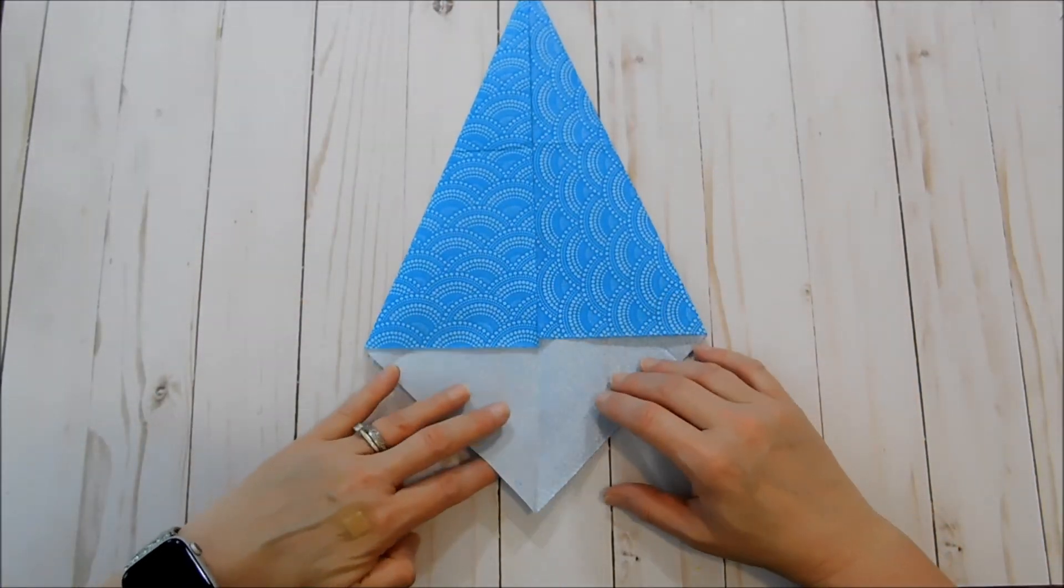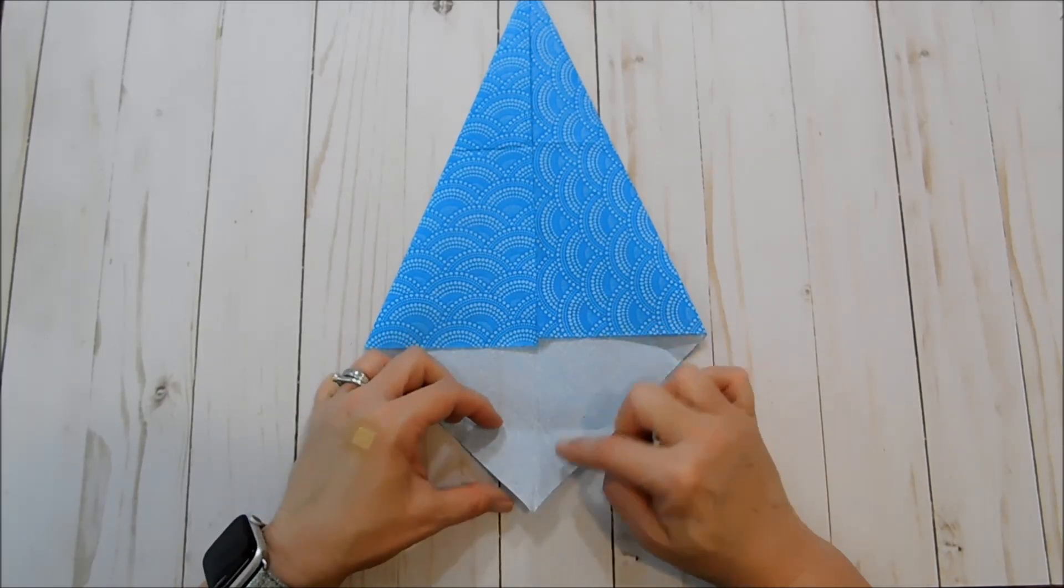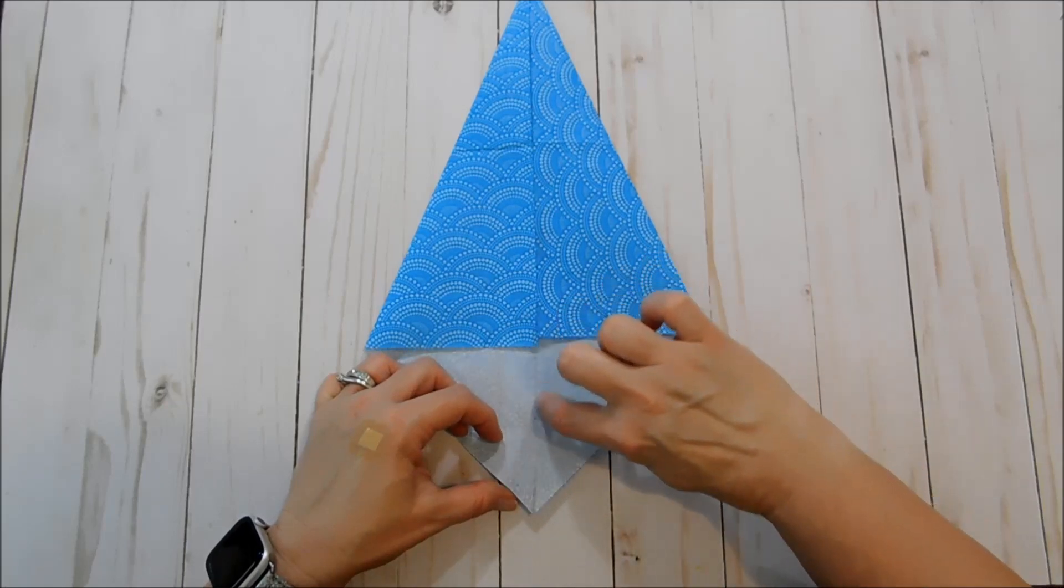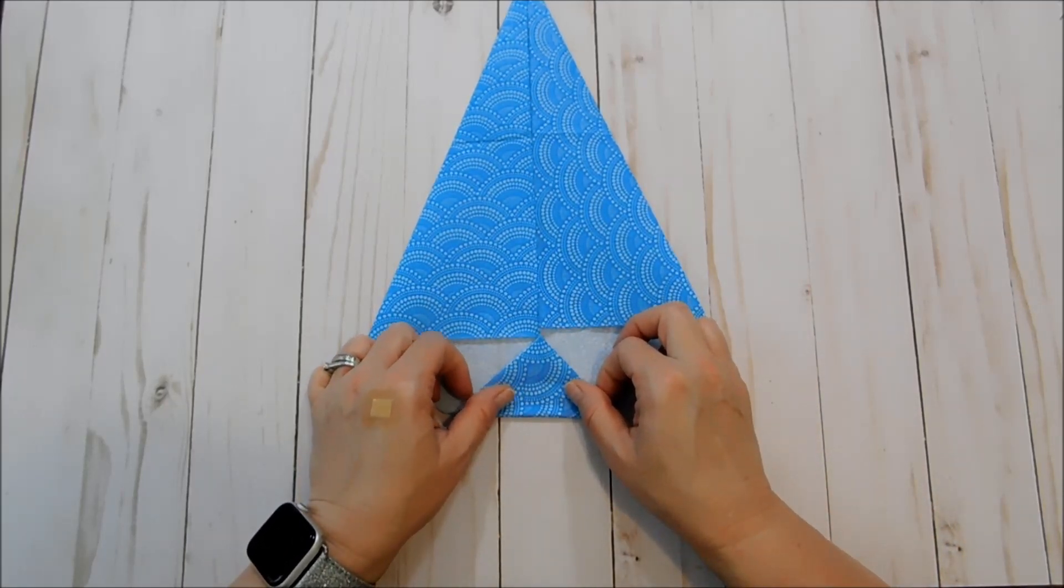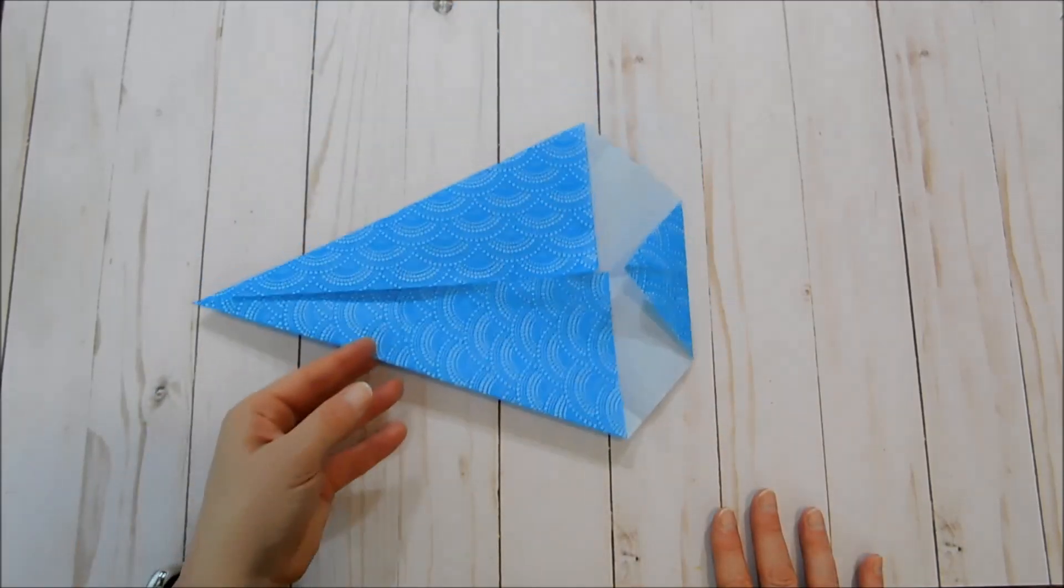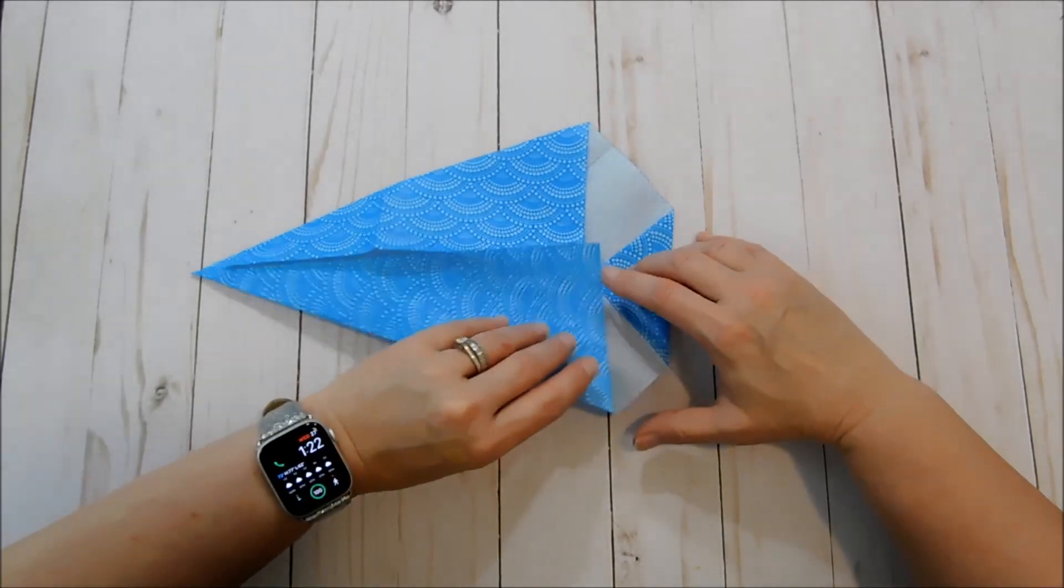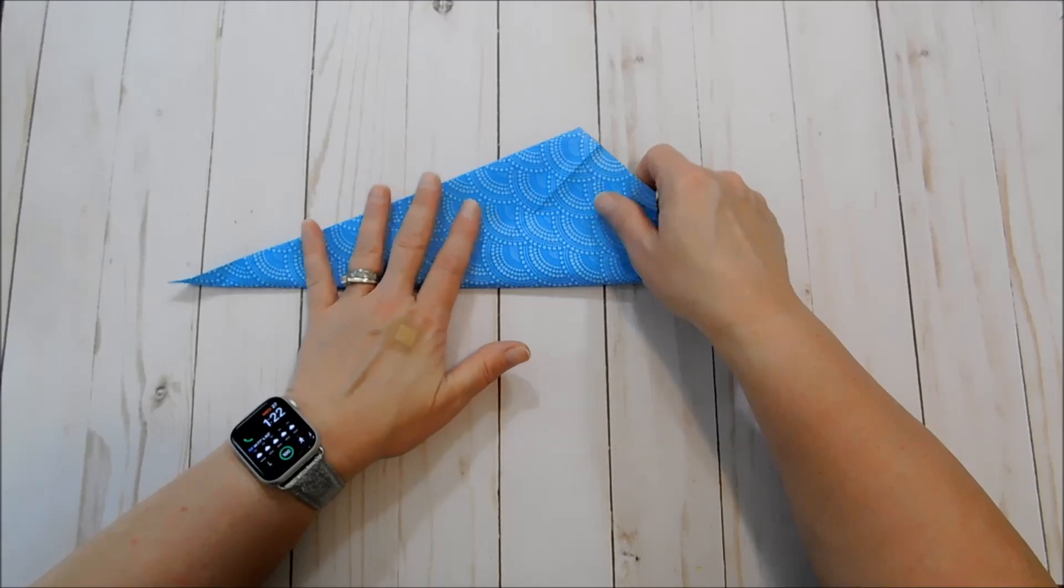And now we're going to fold this straight up. Just make sure that your crease lines up. Okay so at this point we're going to turn it sideways and fold it right along that crease all the way up.